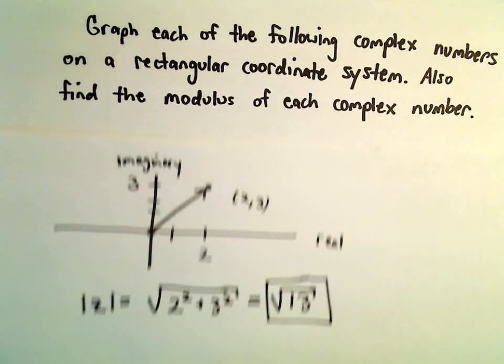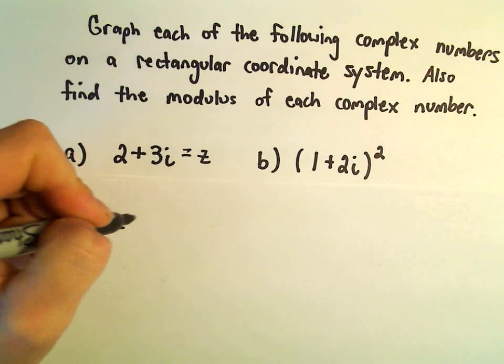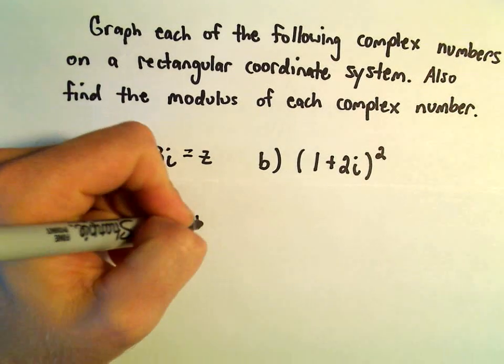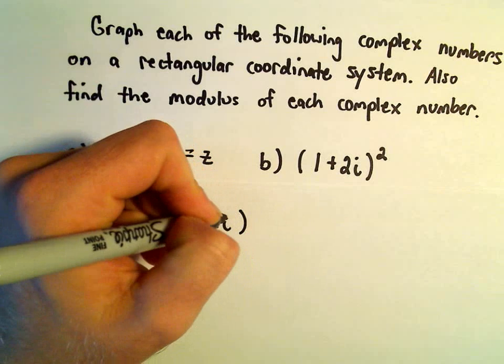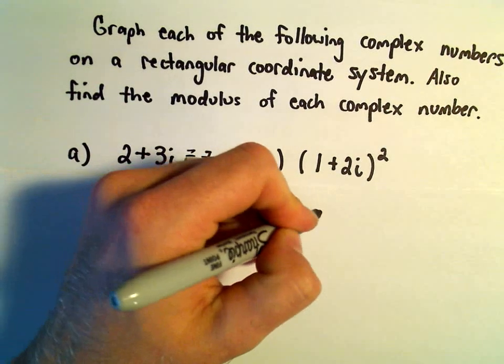Let's do our other example here. Let's do 1 plus 2i quantity squared. The first thing we're going to have to do is rewrite it as a plus bi. So I'm going to multiply this out.